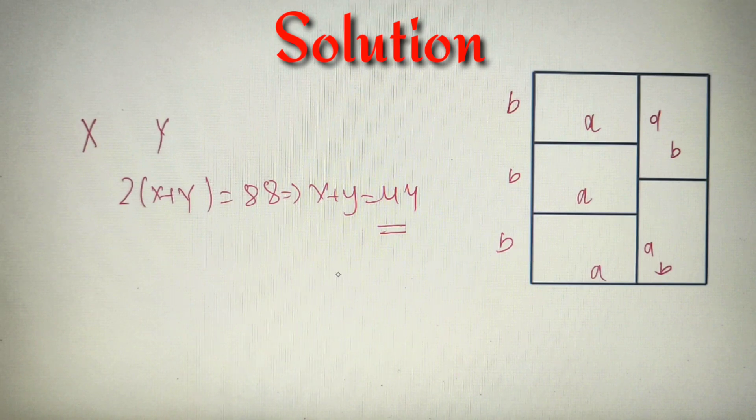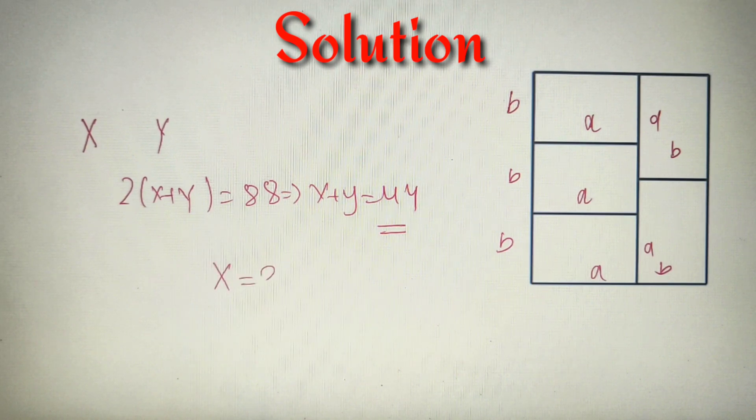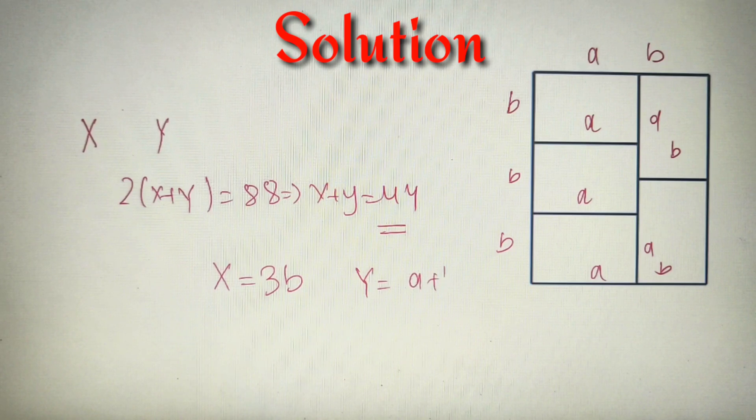So X = 3B, capital X equals 3B, and capital Y = A + B.